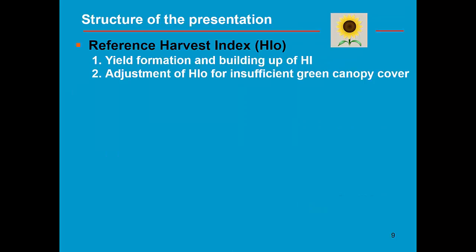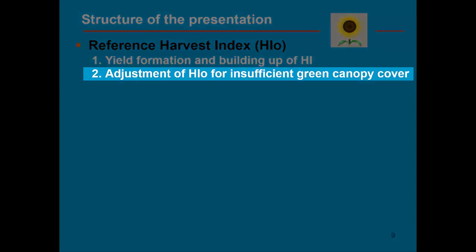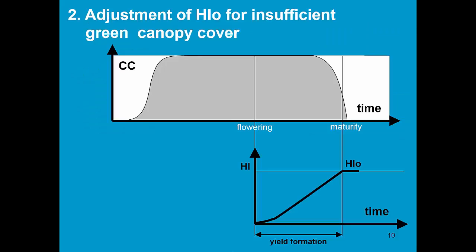Although reference harvest index is a crop characteristic, there might be need to adjust it when there is early senescence. Here we see how the harvest index develops throughout the growing season, and reached its maximum value reference harvest index at maturity.